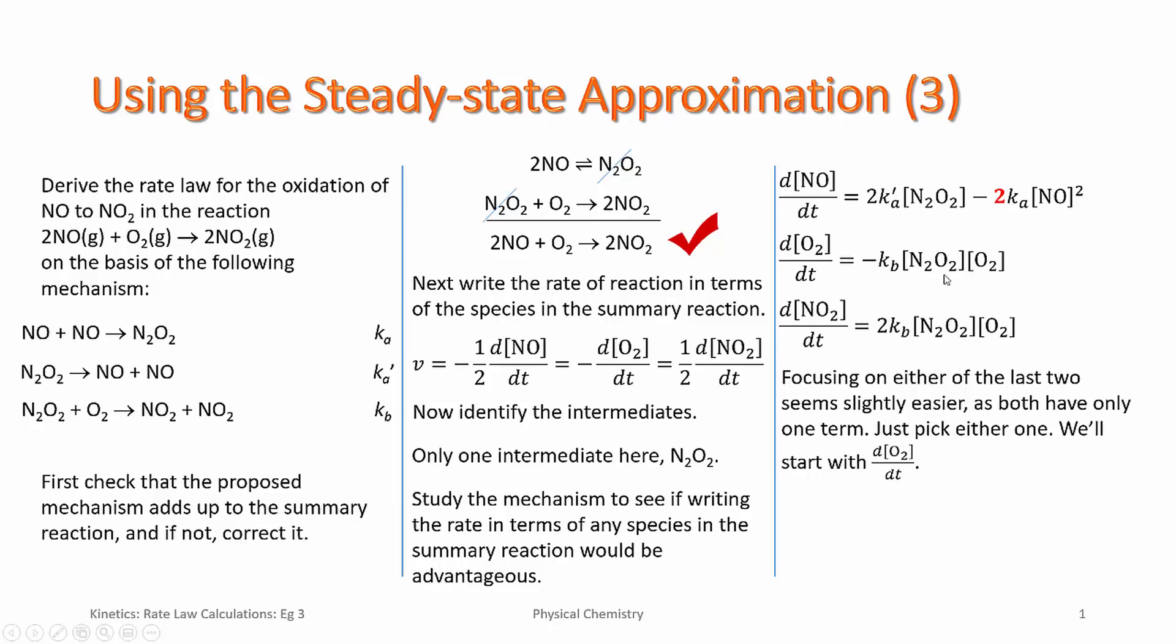Looking at these three, we need the intermediate in all of them, but the last two at least only have one term, whereas the first one has two terms. So picking either of these looks to be slightly more advantageous, less work. We'll start with focusing on the net rate of change of oxygen to begin with.